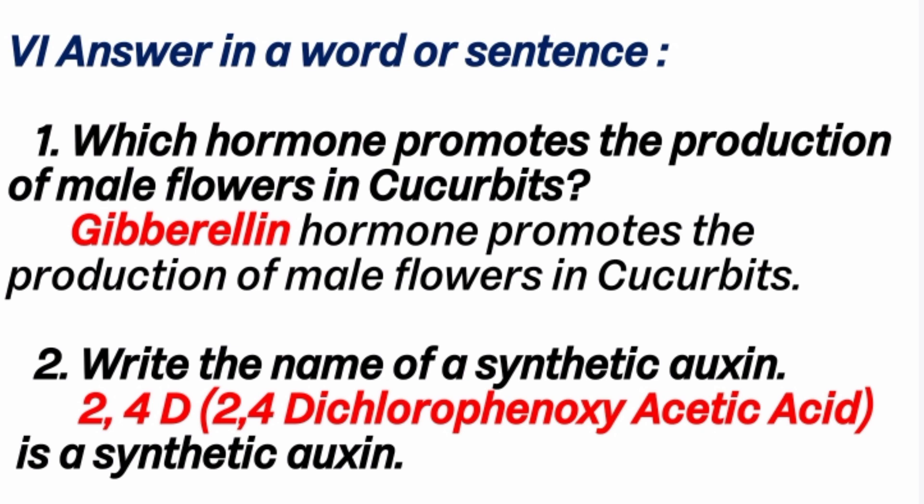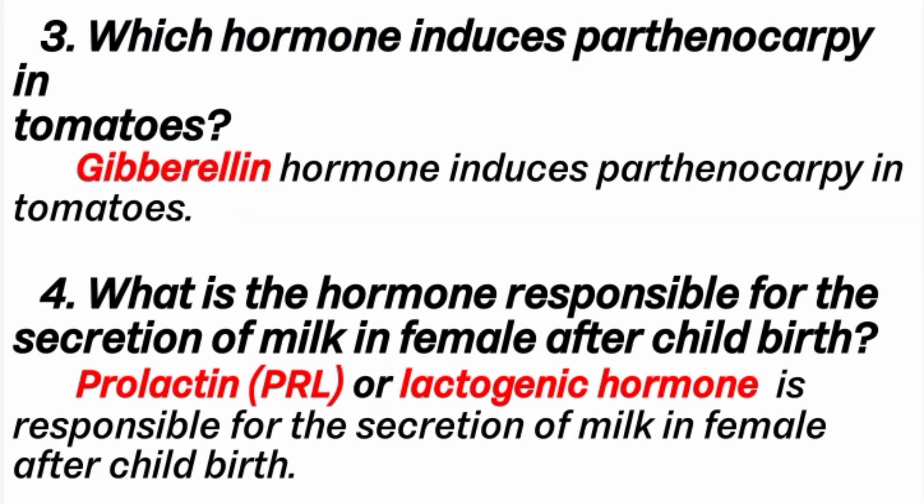2nd question: write the name of a synthetic auxin. Answer: 2,4-D — 2,4-dichlorophenoxyacetic acid. Natural auxin is IAA — indole-3-acetic acid. 3rd question: which hormone induces parthenocarpy in tomatoes? Answer: Gibberellin hormone induces parthenocarpy in tomatoes. Parthenocarpy means plants produce fruits without fertilization. 4th question: what is the hormone responsible for secretion of milk in females after childbirth? Answer: prolactin (PRL) or lactogenic hormone, secreted by the anterior lobe of the pituitary gland.